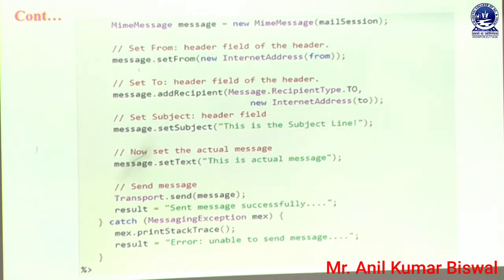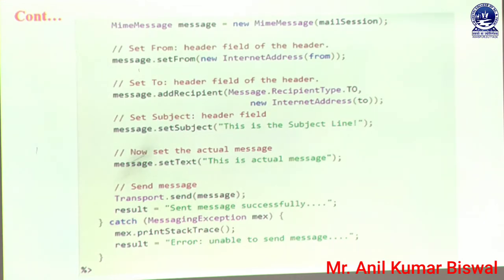After that, if any type of error is created, it is automatically caught through the catch block: catch(MessagingException mex). MEX is an object of the MessagingException class. By using this object MEX we can track what type of mailing errors are created in this program. We use mex.printStackTrace() to trace the error present in our mailing program. At last we can define result = 'Error: unable to send message'. If our message is not successfully executed, this statement is displayed through our web browser.